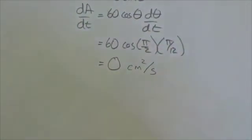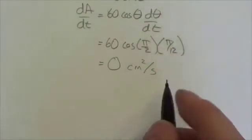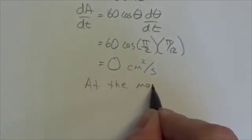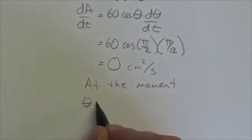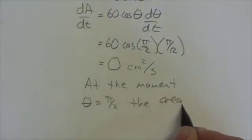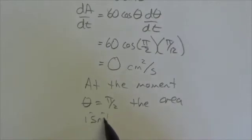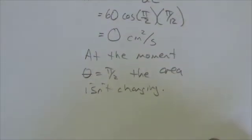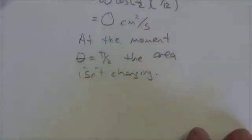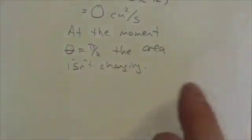In other words, what we know here is at that moment of time here when, so at the moment θ is equal to π/2, the area isn't changing. So I suspect what's happening here is that one way or another here, the area was either increasing or decreasing.